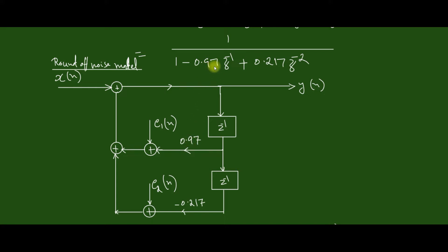Minus 0.97 becomes plus 0.97. Here it is minus 0.217. Then in every product output, we add an error function. That is, here it is e1 of n, here it is e2 of n, and the error functions are summed together and given as the input to the system.